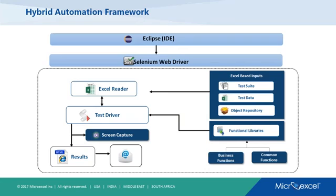That was the test case and object repository. But the whole framework has other components too. Here is a pictorial representation of the complete hybrid model. You create the framework in Eclipse, then use a Selenium WebDriver API for web browser automation. On the right side, you have test data and object repositories in Excel. You can also list your test cases in a test suite Excel — so all Excel-based inputs are on the right side.